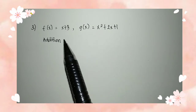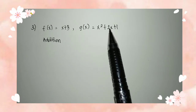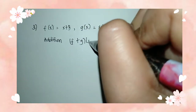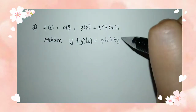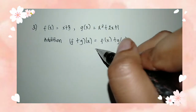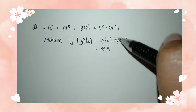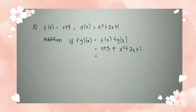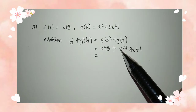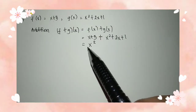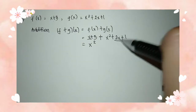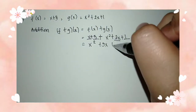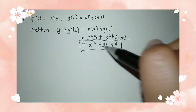Moving on to example number 3. We have f of x is equal to x plus 3, and g of x is equal to x squared plus 2x plus 1. Moving on to addition, we have f plus g of x is equal to f of x plus g of x — we just add them both. So f of x is x plus 3 plus g of x which is x squared plus 2x plus 1. We copy x squared since it has no like term. Then x and 2x are like terms, so x plus 2x equals 3x. Then 3 plus 1 equals 4. The correct answer is x squared plus 3x plus 4.